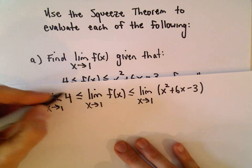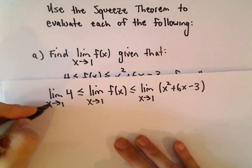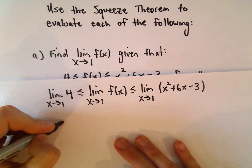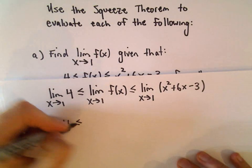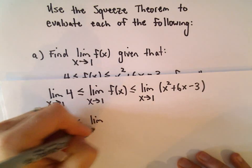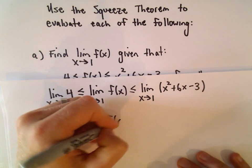Well, the limit of a constant is just the constant, so the limit as x approaches 1 of the number 4 is going to be 4. That's going to be less than or equal to the limit as x approaches 1 of f of x.